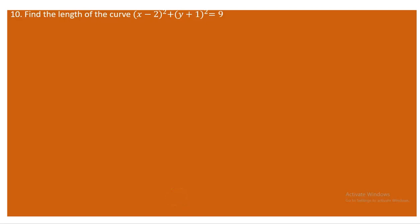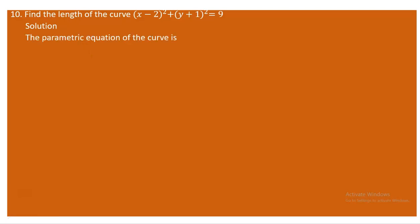Now let's determine the length of the curve made by a parametric vector function. You are given a circle with center at (2, -1) and radius 3 units, and you are supposed to find the length of the curve. First, since this is a circle, we have to determine the parametric equation of the circle. The parametric equation of the circle with center (2, -1) is given as follows.